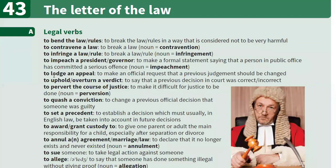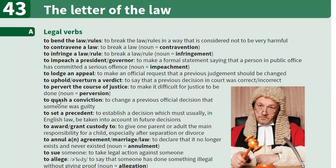The next phrase is 'to pervert the course of justice.' In British English, the 'r' is mostly silent, so you would say 'to pervert,' whereas in American English you pronounce the 'r.' 'To pervert the course of justice' means to make it difficult for justice to be done. The noun is 'perversion.'